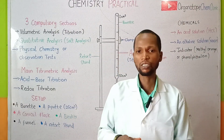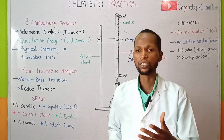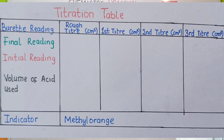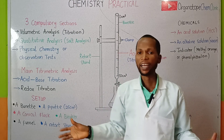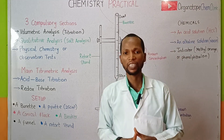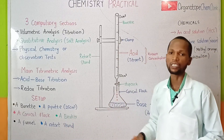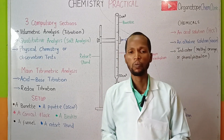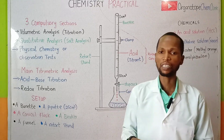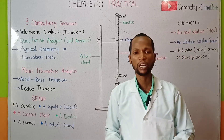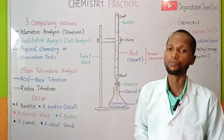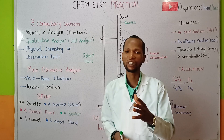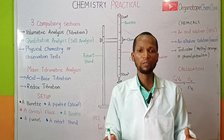The second, third, and fourth titrations are based on obtaining our concordant value. A concordant value is achieved when there is no more than a ±0.1 cm³ difference between readings. For this experiment we record the rough titer, first titer, second titer, and third titer in a table, with all measurements in cm³. When taking the average titer value we do not include the rough titer — we focus on the concordant values. If three titrations are concordant we use all three; if only two are concordant we use those two for averaging.